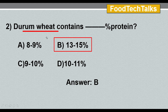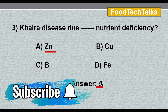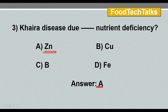Third question: Khaira disease is due to which nutrient deficiency? Options: A) zinc, B) copper, C) boron, D) iron. The answer is option A, zinc. Khaira disease is a non-parasitic or non-infectious disease; common symptoms include dusty brown spots on upper leaves of standard plants or uneven plant growth. This disease is commonly found in the rice plant.